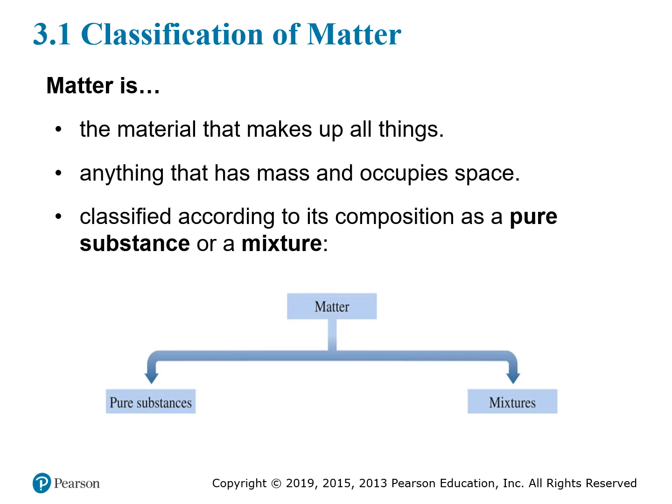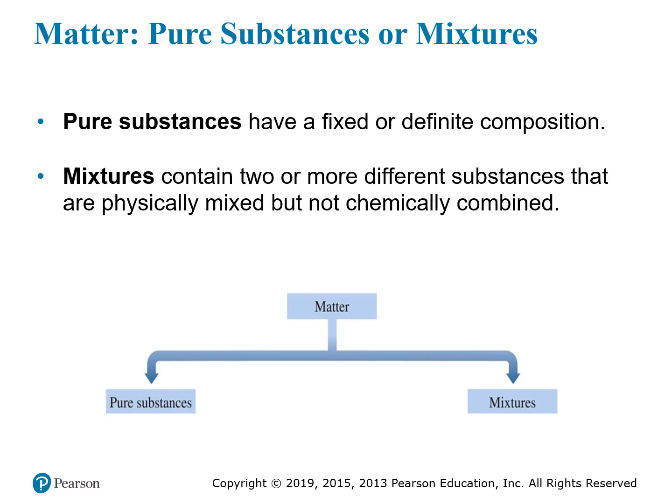In chemistry, matter can be classified according to whether it is a pure substance or a mixture. A pure substance is one that has a fixed or definite composition — every sample of that pure substance is going to be exactly the same, no matter where you are or how it was prepared. For a mixture, you have different kinds of matter mixed together, but they can be mixed in different proportions, so they may differ depending on how they were created.